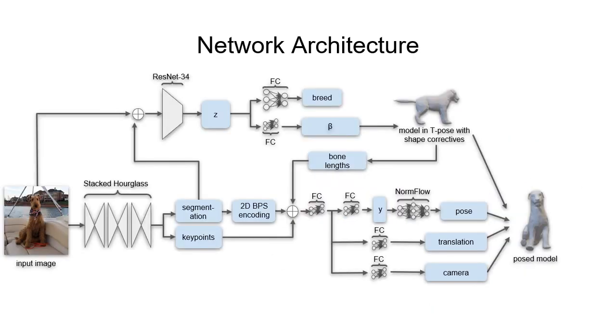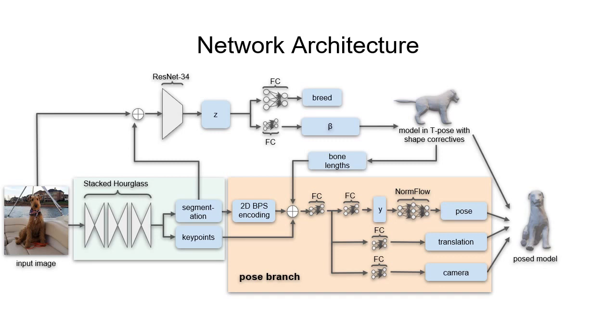Our network takes a single image of a dog as input and regresses its 3D shape and pose. The network is split into a pose branch, which uses a stacked hourglass to predict 2D keypoints and segmentation masks, and a shape branch.